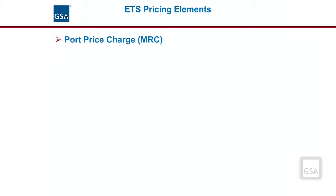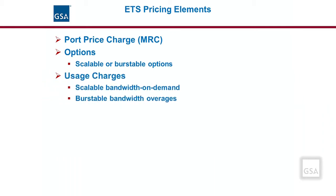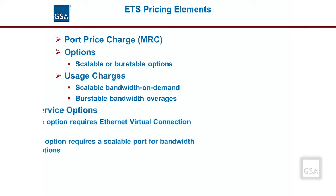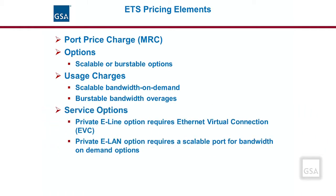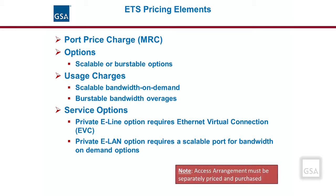For Ethernet transport service, there will be a monthly charge for the cost of each Ethernet port based on its speed and added capabilities. Added options will also affect pricing. On EIS, there are scalable and burstable options available. For the scalable bandwidth on-demand options and the burstable option, there may be usage charges associated with any capacity overages. Based on the service option required — Private E-Line or Private E-LAN — there may be other associated costs. For example, for the Private E-Line service there is a charge for an Ethernet virtual connection (EVC), and for the Private E-LAN service with a bandwidth on-demand option, a scalable port is required. Access arrangements must be separately priced and purchased and are not included with the service. All of this information is detailed in sections B and C of the EIS contract.